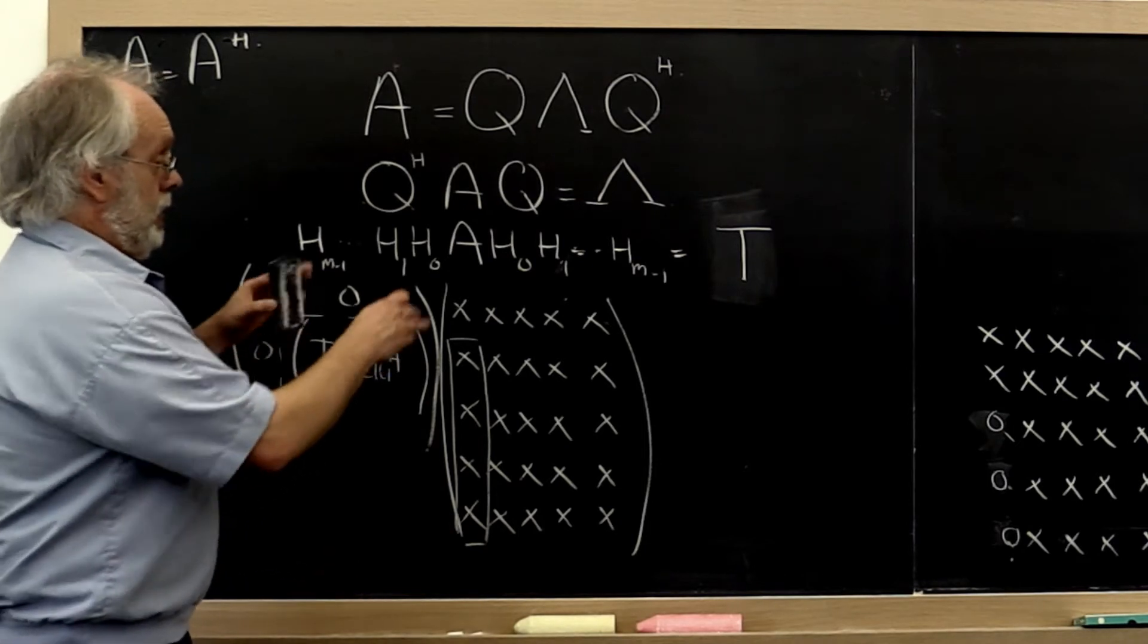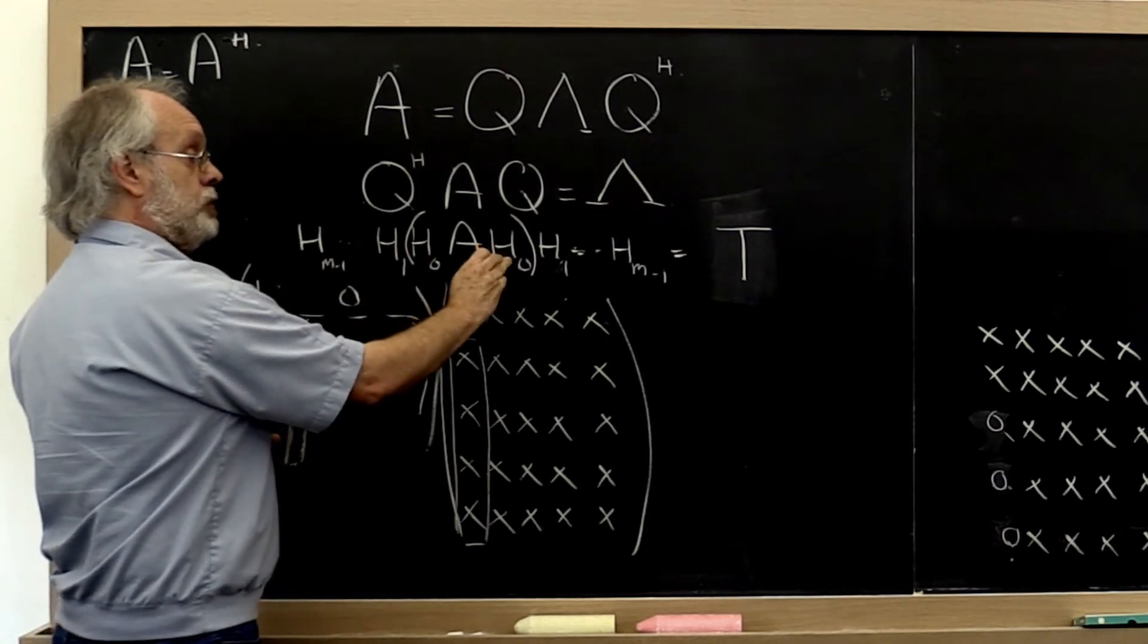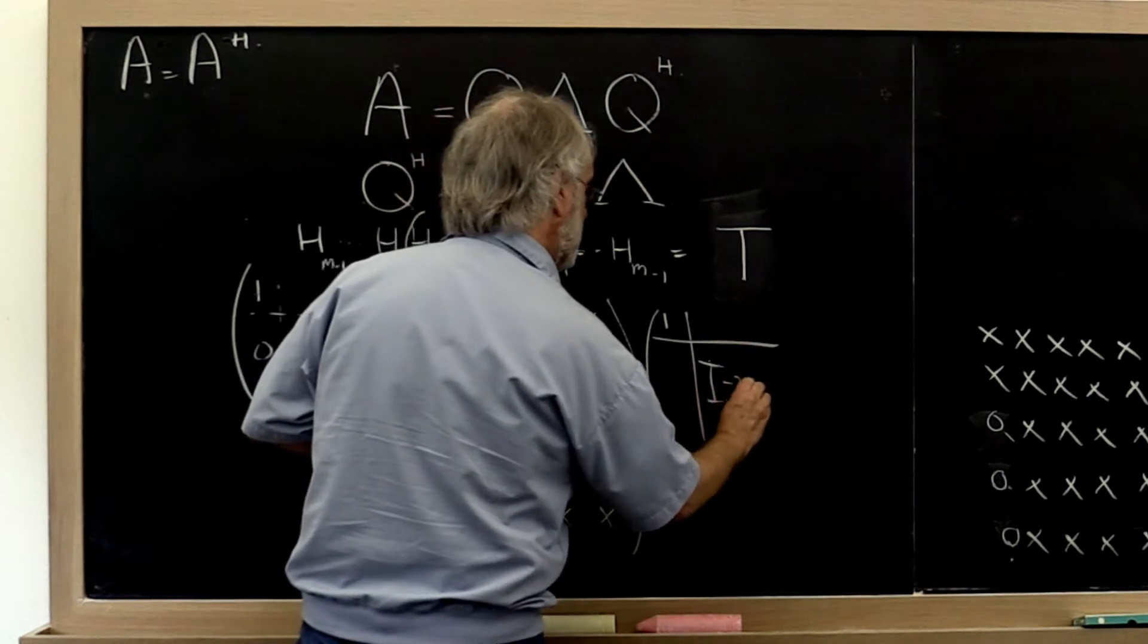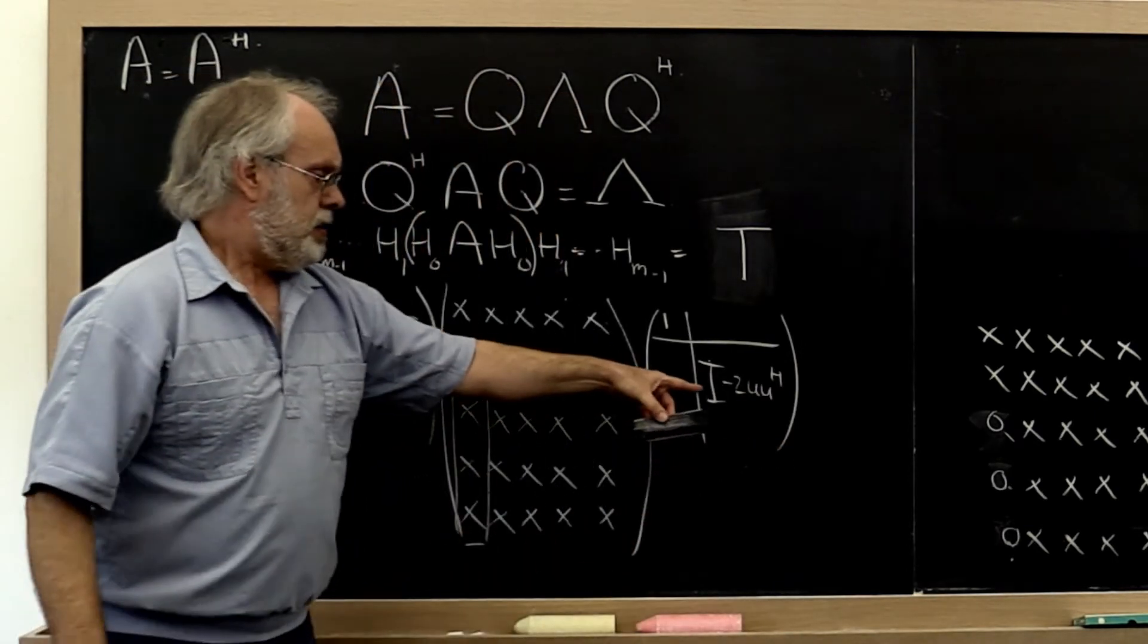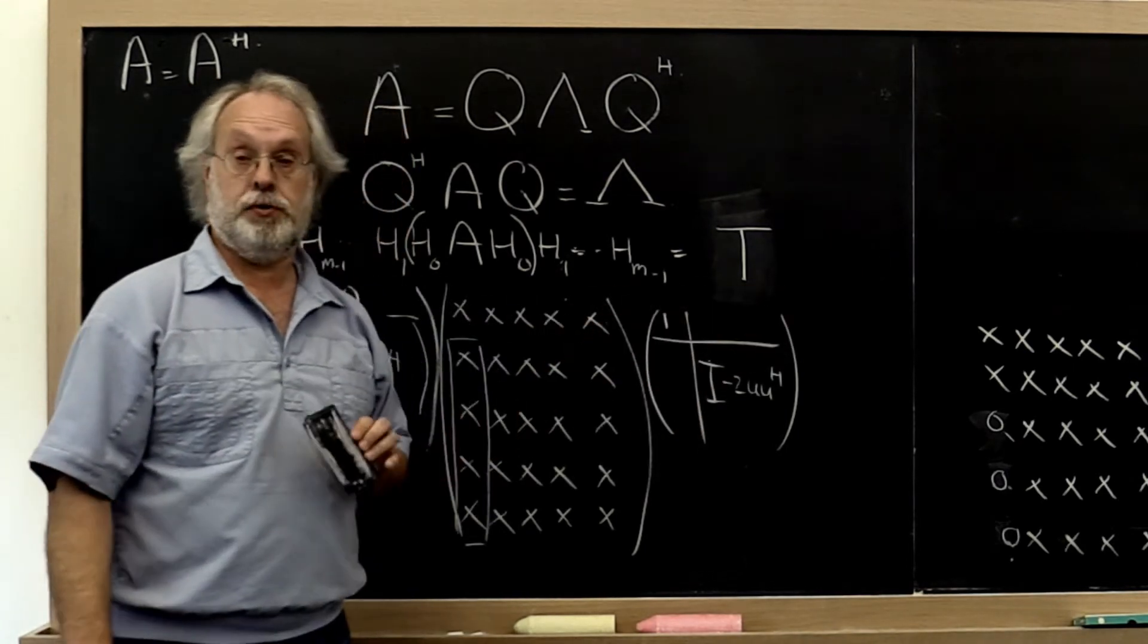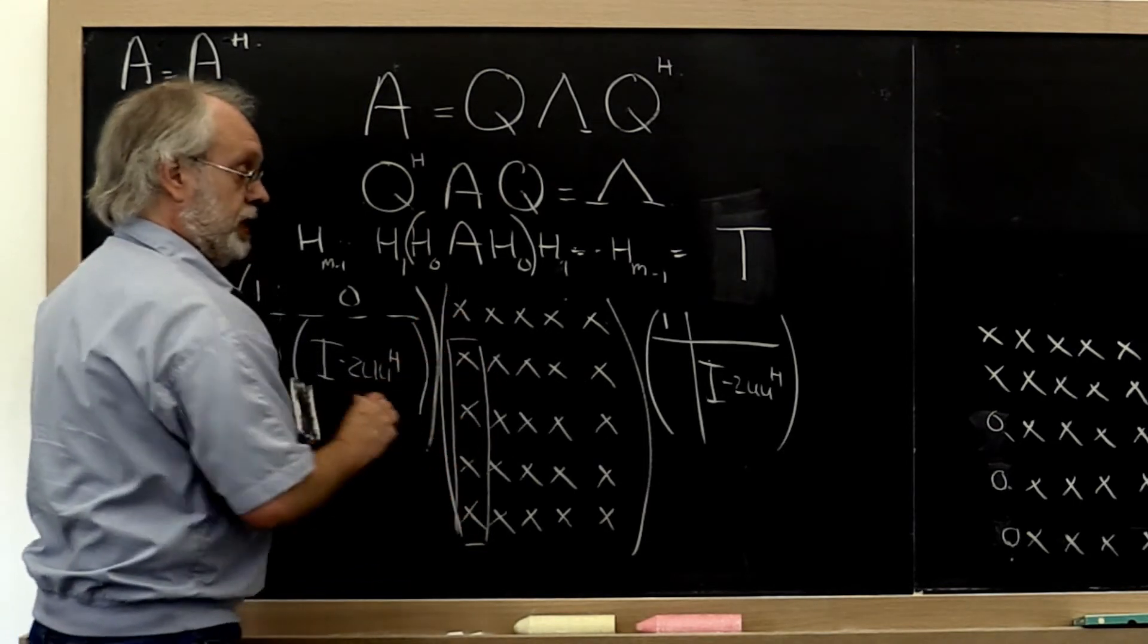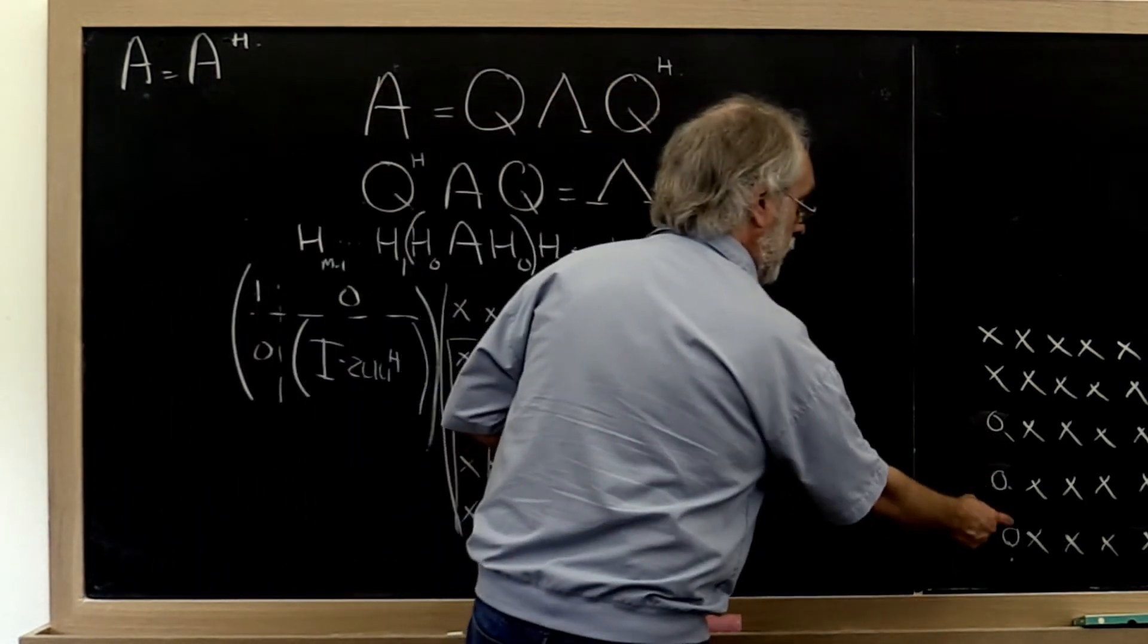Now what we notice from here is every time we apply a Householder transformation from the left, we should also apply it from the right. Therefore let's see what happens if we take this Householder transformation and also apply it from the right. Remember a Householder transformation is its own Hermitian transpose, so I don't need to put a Hermitian transpose on here. The important thing is when we now apply this from the right to this matrix, the first column of the matrix is not affected. So these zeros that we just introduced here remain zeros.